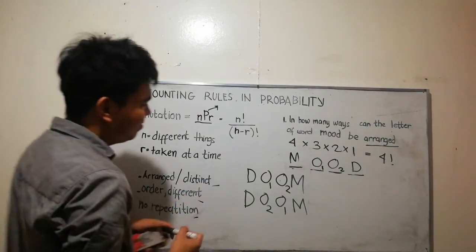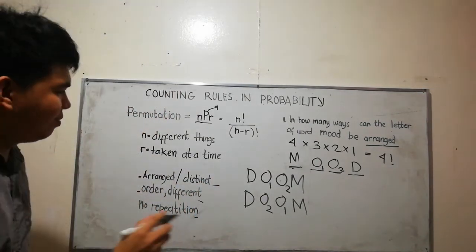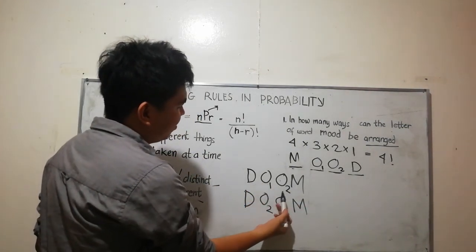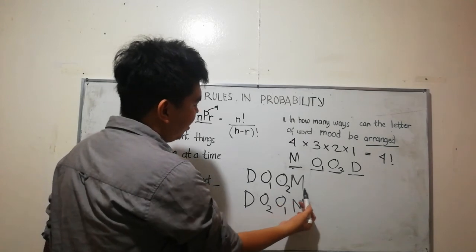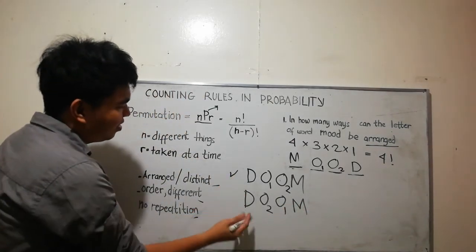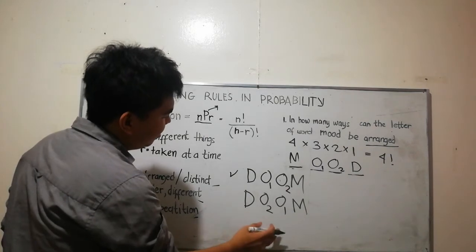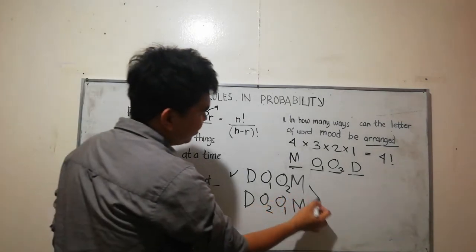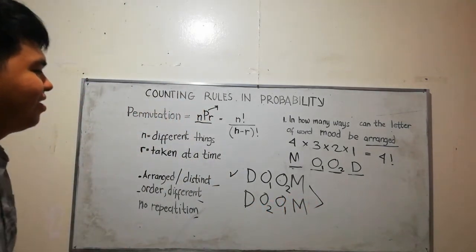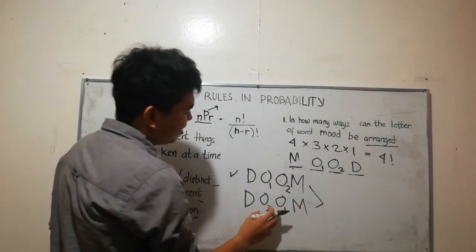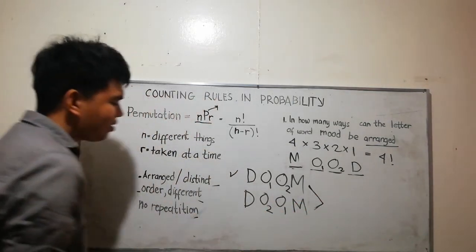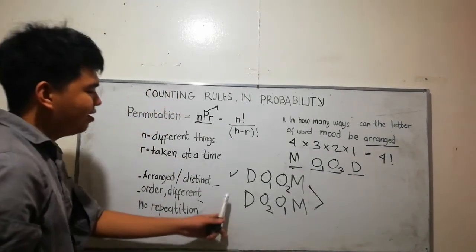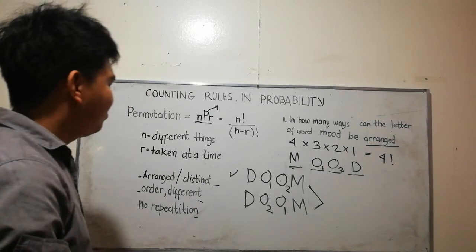I have DOOM, D O sub one, O sub two and M. And I have another word: D O sub two, O sub one and M. So is this word different? No, it's the same because whether you interchange the Os, the word is also the same.